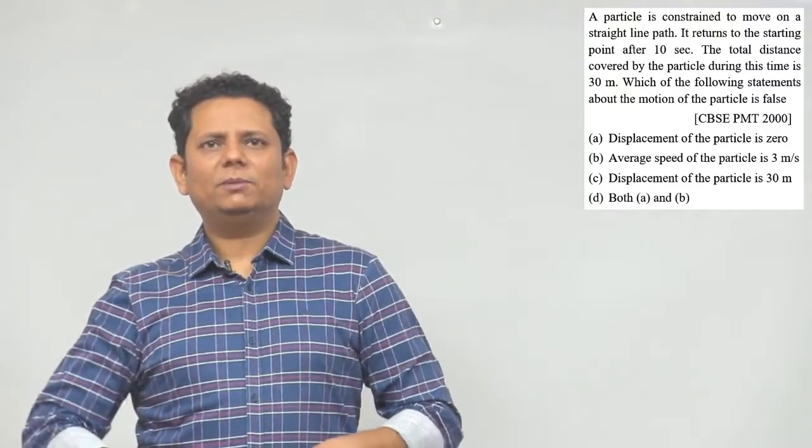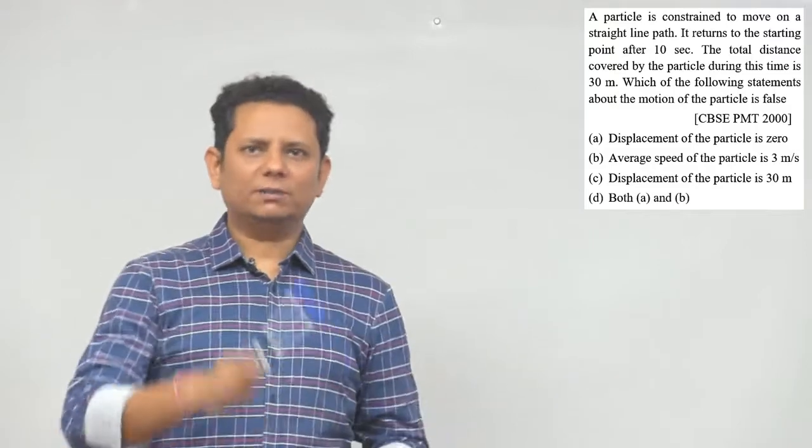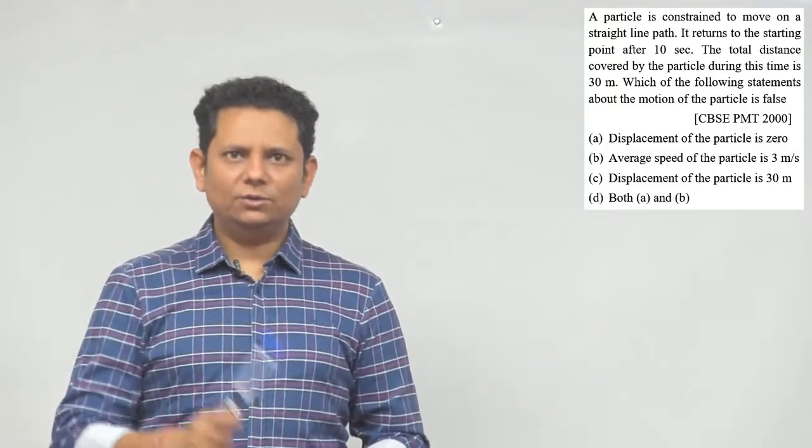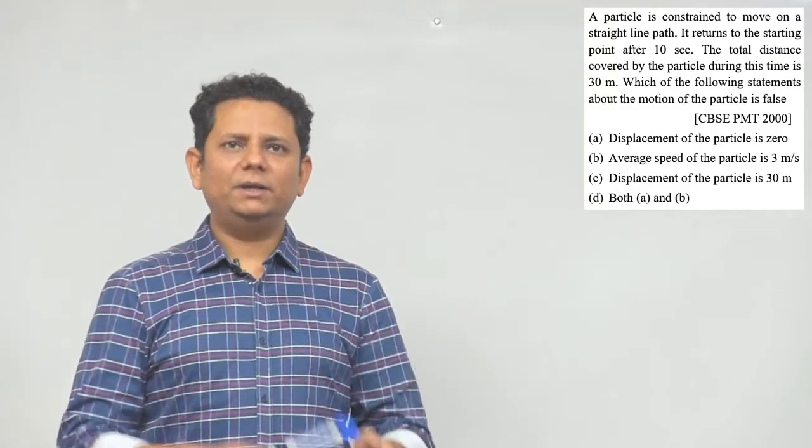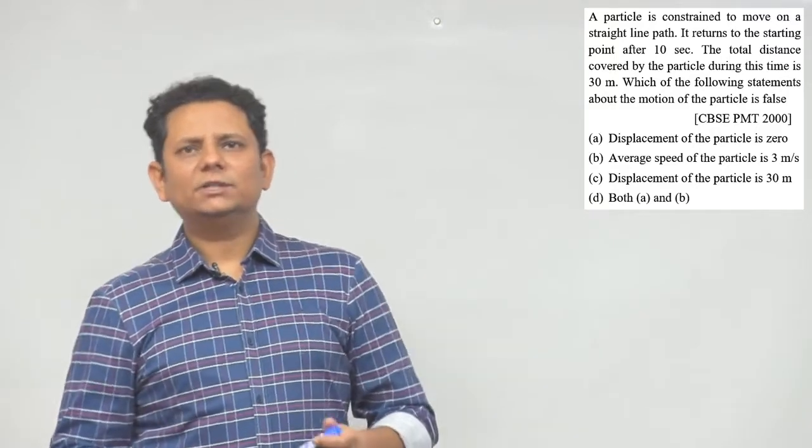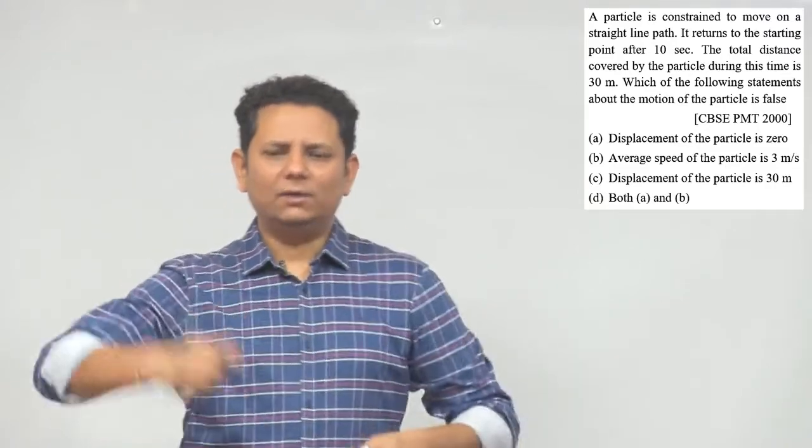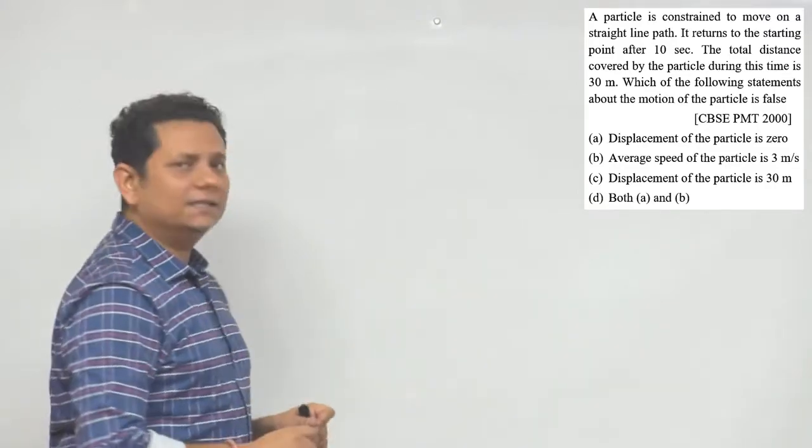Which of the following statement about the motion of the particle is false? Hame false statement batana hai. Pehla hai displacement of the particle is 0, doosra hai average speed of the particle is 3 meter per second, tisra hai displacement of the particle is 30 meter, or fourth hai both (a) and (b) are false.